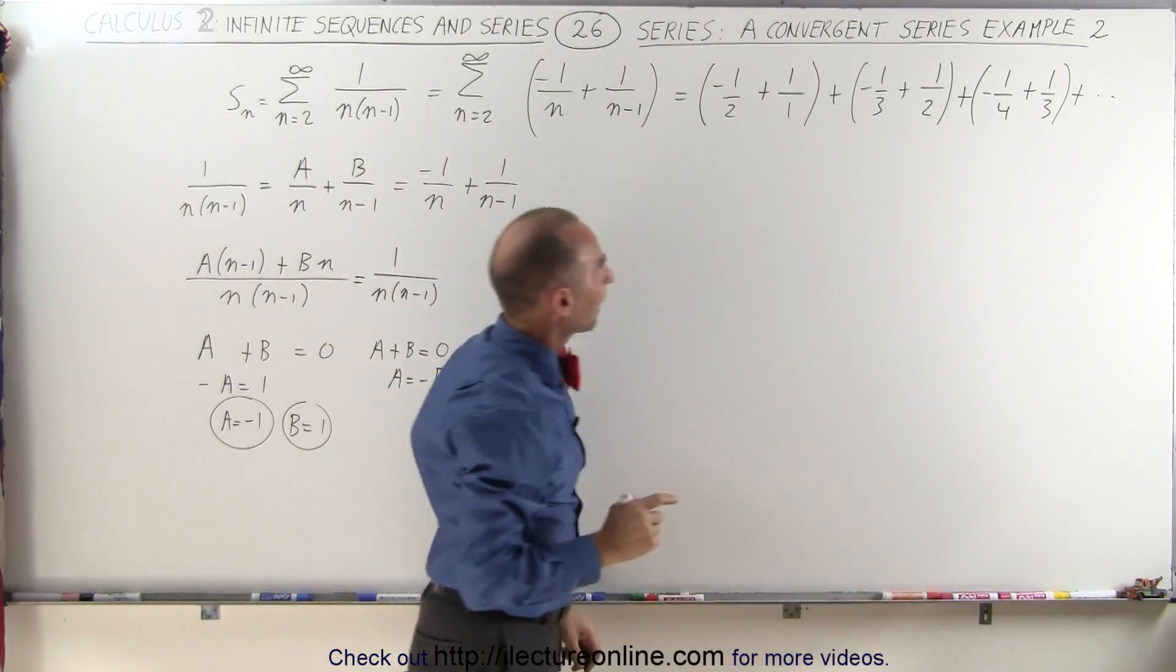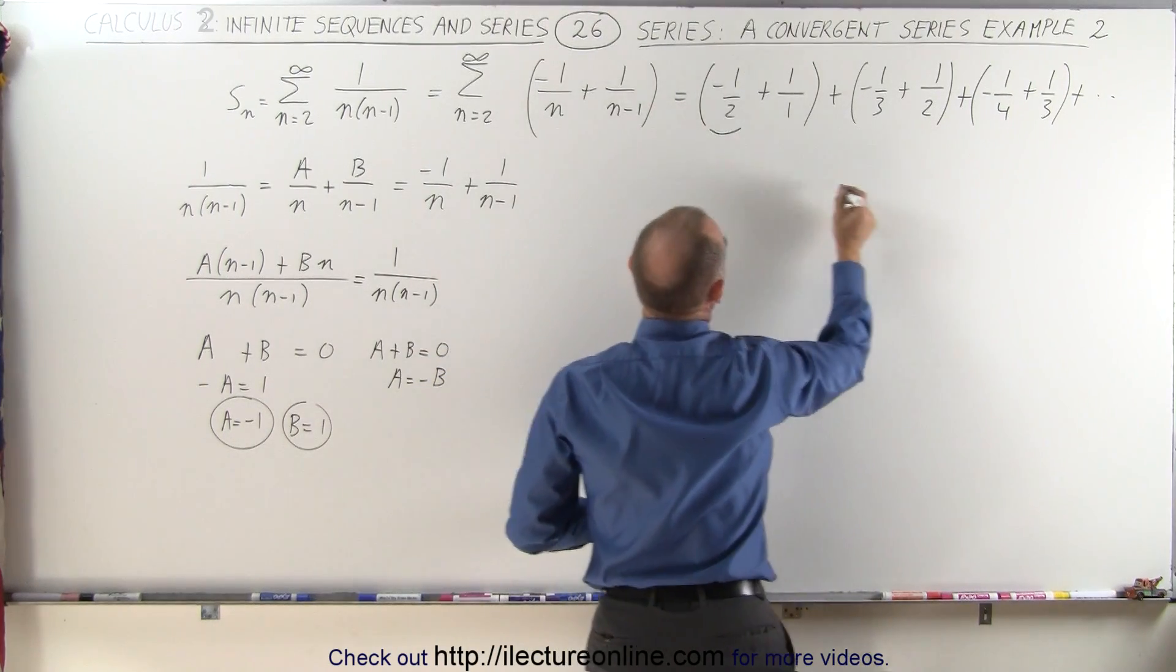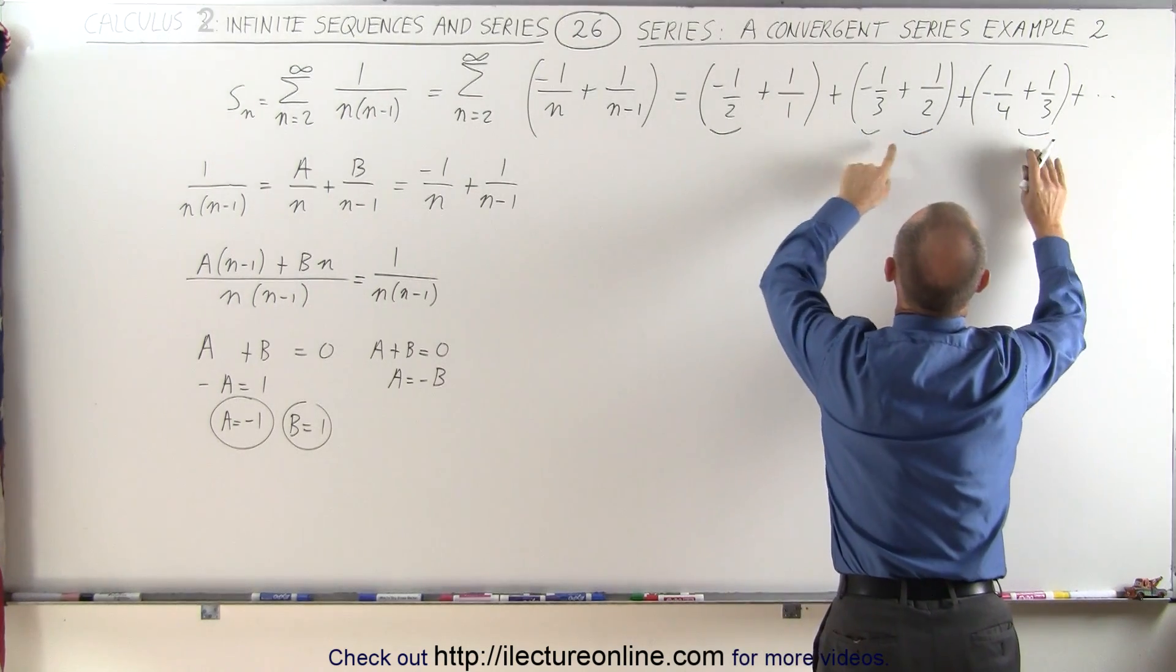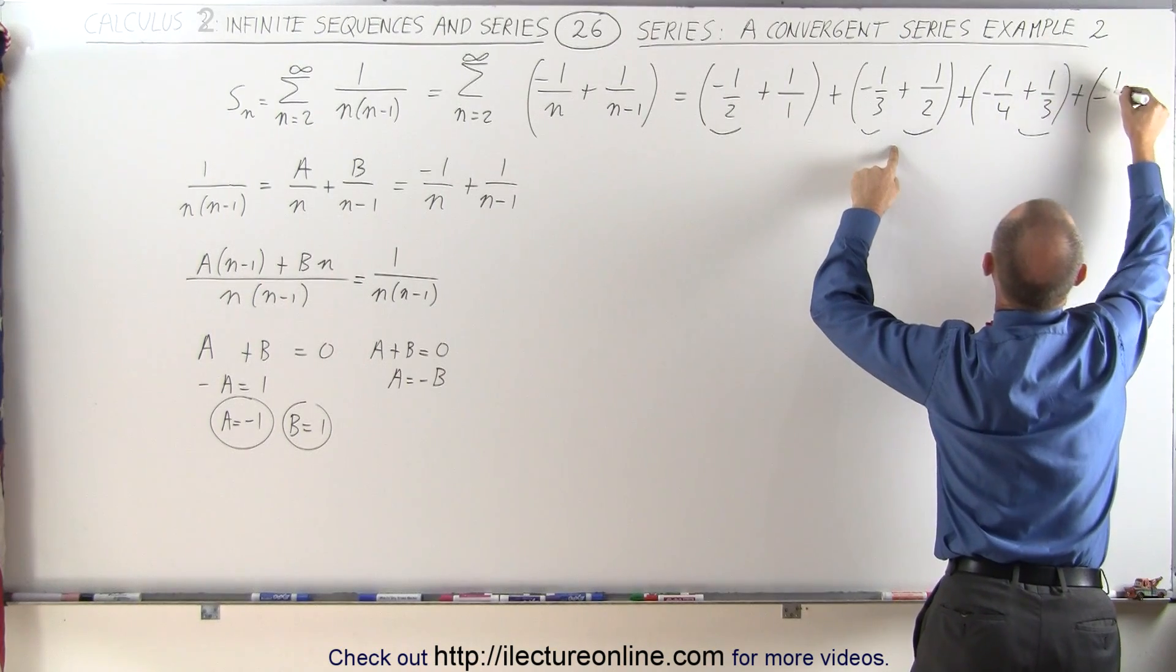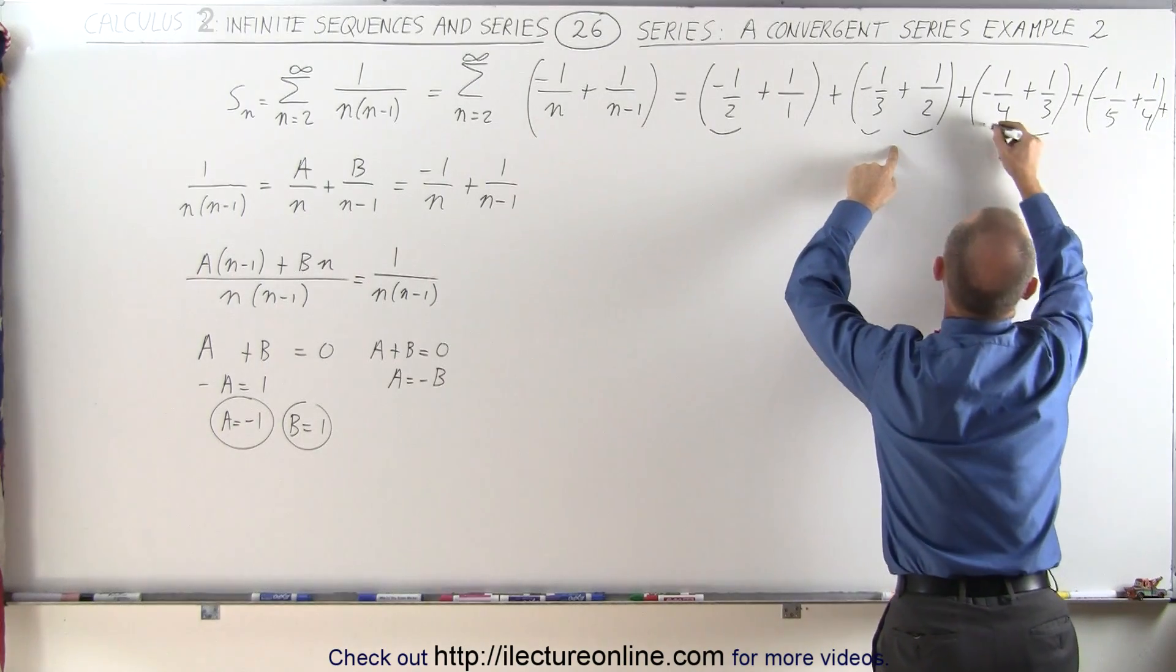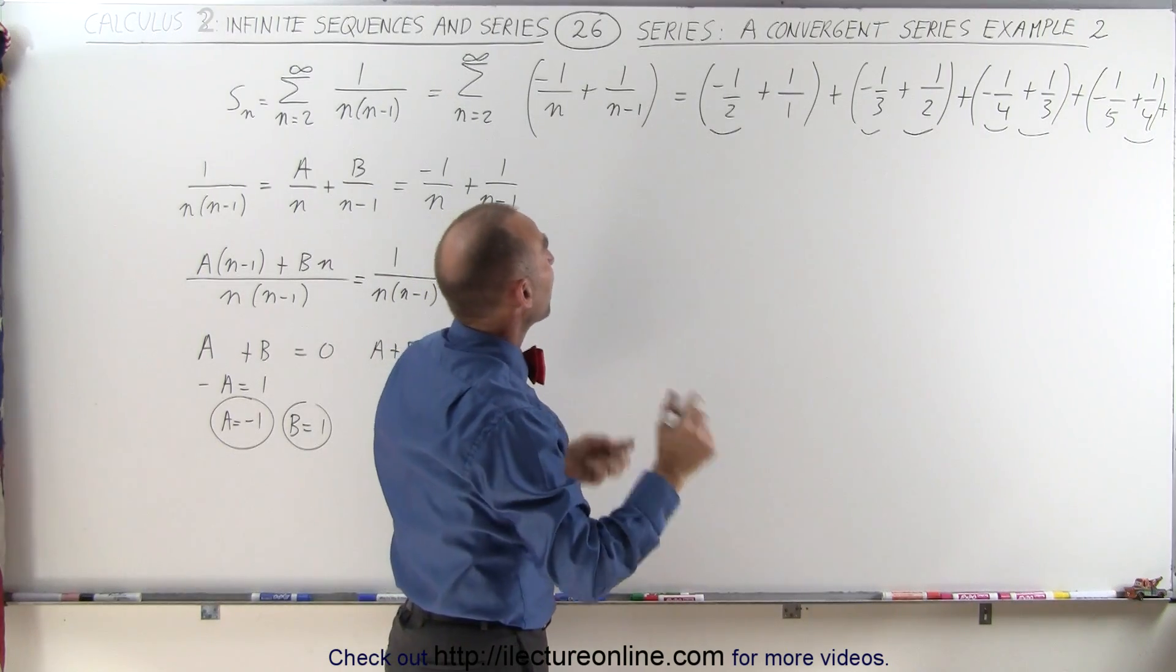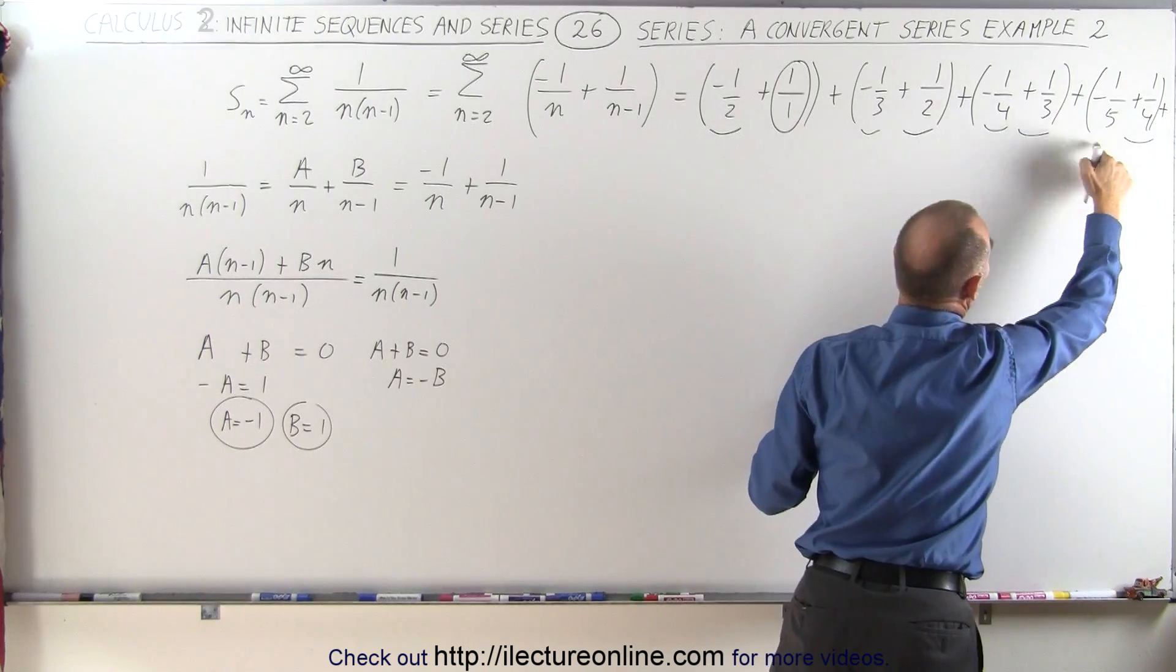When we look at it, it looks a little bit different, but you can see that we have a negative 1 half here and we have a positive 1 half; they cancel out. We have a negative 1 third and a positive 1 third, which cancel out. And if you imagine the next term, which would be minus 1 over 5 plus 1 over 4, you have a negative 1 fourth and a positive 1 fourth, and here you begin to see the pattern. The only thing that will remain is the 1 over 1 and the very last term as you go to infinity, which will be minus 1 over infinity.